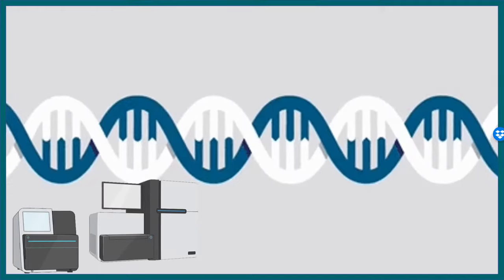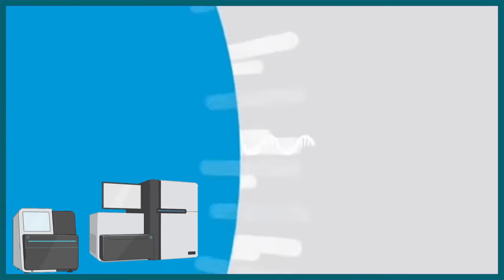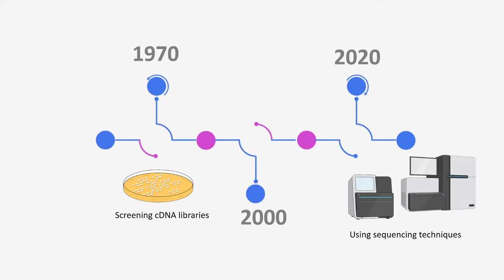In this era of high-throughput sequencing, the importance of genomic or cDNA libraries has kind of diminished. But back in the 1970s, screening cDNA libraries or genomic DNA libraries was crucial for scientists to learn more about the genome or transcriptome. That is why let's talk about the screening strategies they used, to determine whether a particular cDNA or gene of interest is present in a library. One such technique is called colony hybridization.